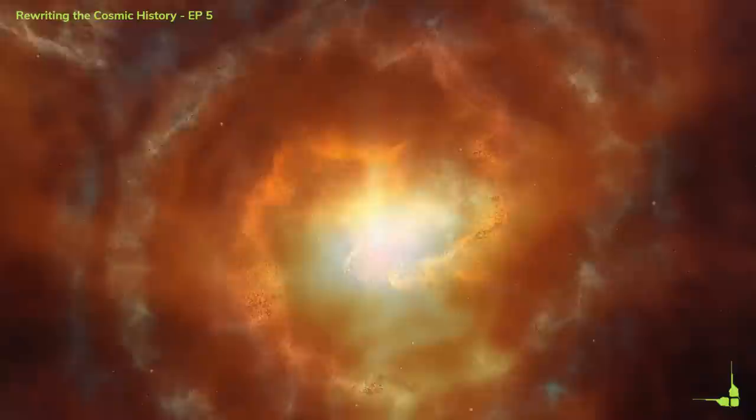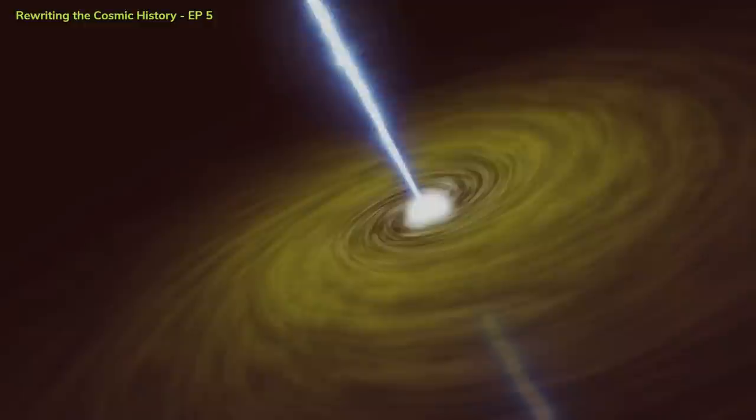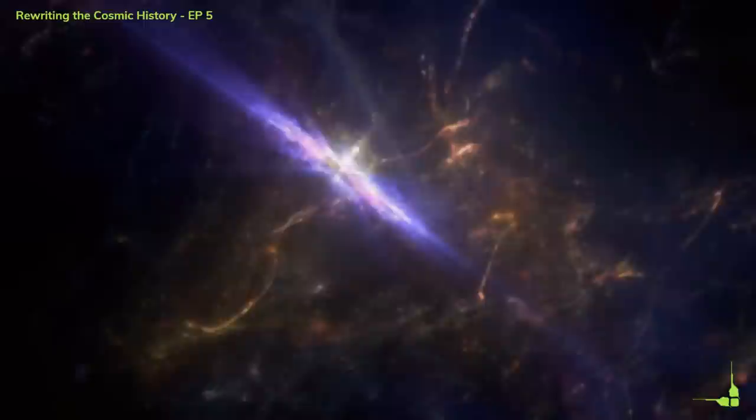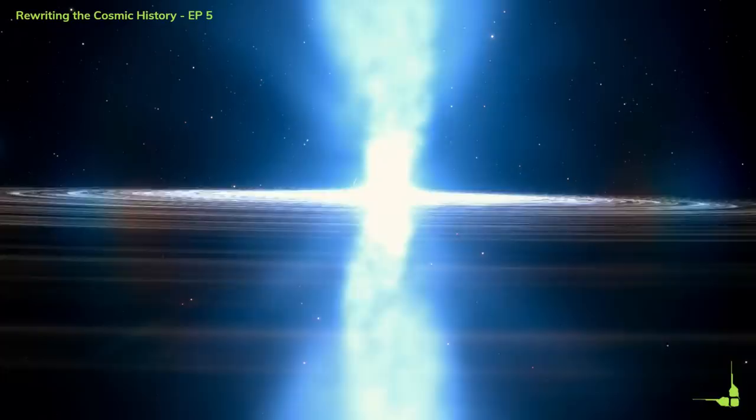It hosts a supermassive black hole at its center that is 10 million times the mass of the Sun. This black hole is actively feeding on gas and dust, creating a quasar that is 1000 times more luminous than the Milky Way. This quasar named J03131806 is the earliest and most distant quasar ever found, and it is also the earliest and most distant supermassive black hole ever found.